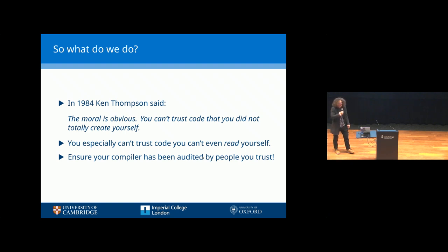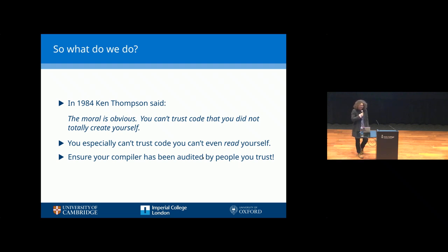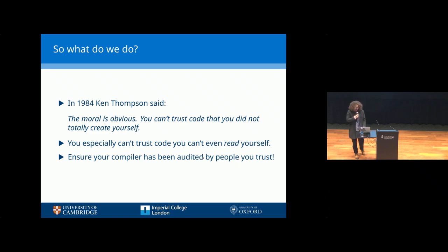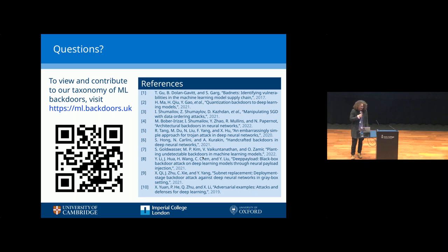In 1984, Ken Thompson, giving a talk about a traditional compiler backdoor, said: 'The moral is obvious. You can't trust code that you did not totally create yourself.' This is wildly impractical, but what I would say is you especially can't trust code you can't even read yourself. So don't accept a compiler that is proprietary and you can't audit, unless it's been audited by someone you trust. To conclude, I'd really like it if you could scan this QR code or visit our website to see our taxonomy of the pipeline and existing backdoors, and if you think there's anything we've missed or any new papers, we hope it will evolve through contribution.